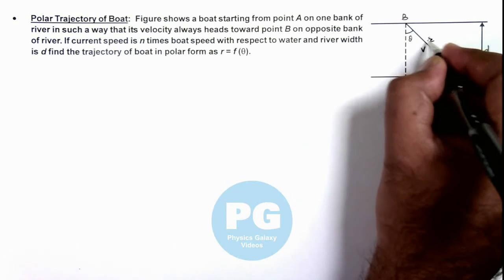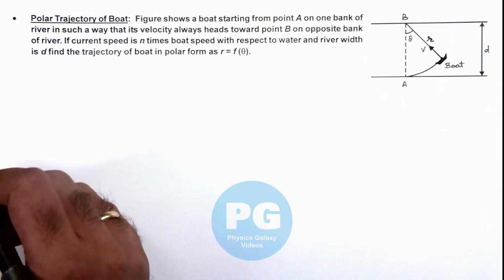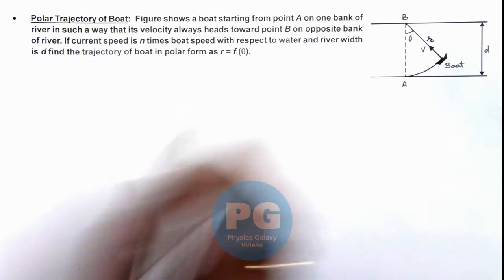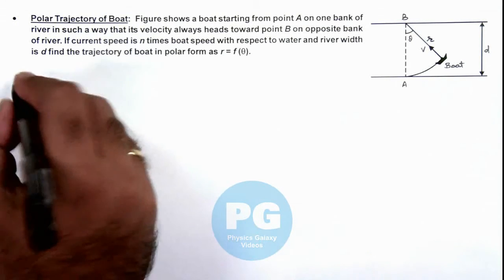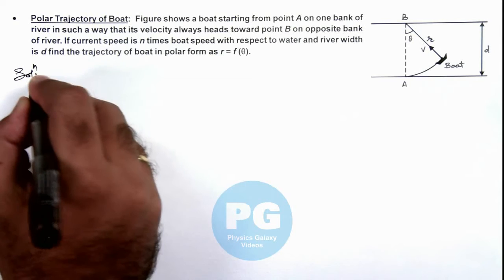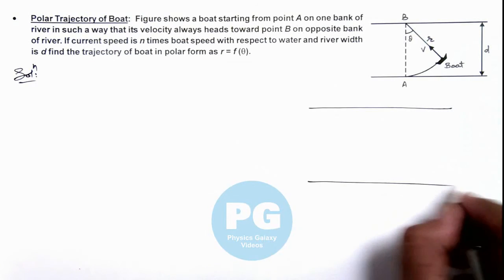Here we take the position of the boat at a distance r from point B. So here we are required to find r as a function of theta for the boat, which is termed as polar trajectory. Here in the solution we can first redraw the picture for its in-depth analysis.